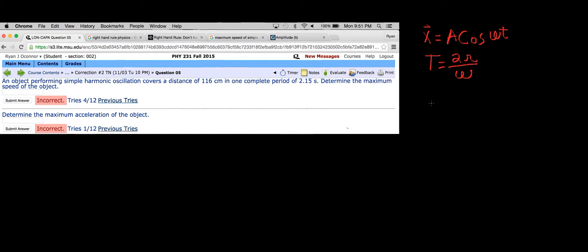First off, let's look at what I wrote in the top right corner. We know our displacement equation is x equals the amplitude times the cosine of our angular velocity times time. We know the period is equal to 2π over our angular velocity.